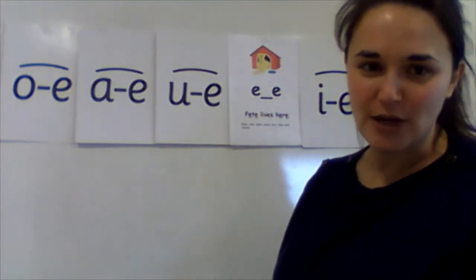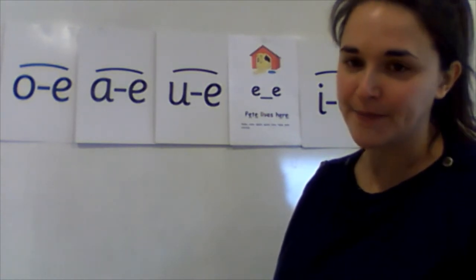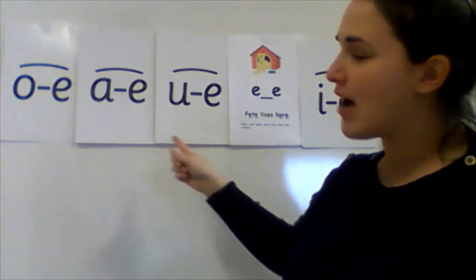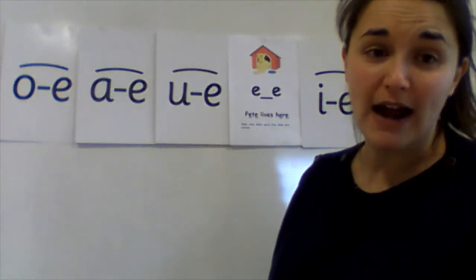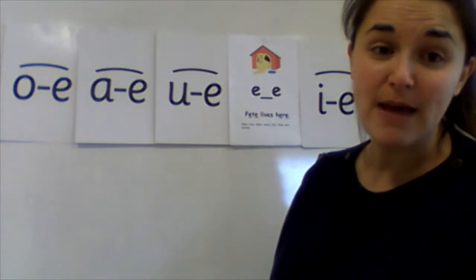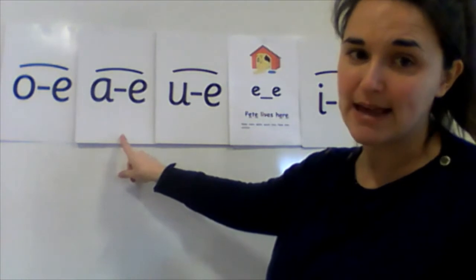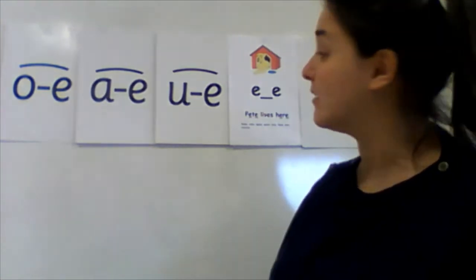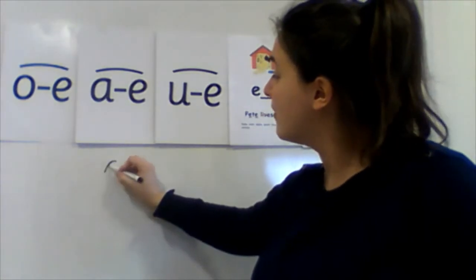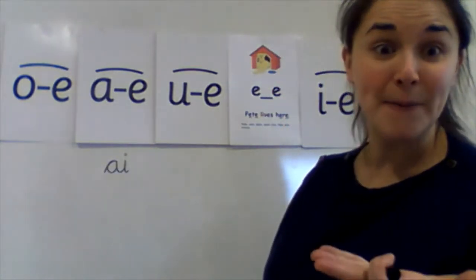Now I'm going to set you a little challenge this morning. You will need your pen and paper. We know how to write these split digraphs but we also know how to write other ways of making the same sound. For example, A-E make a cake.